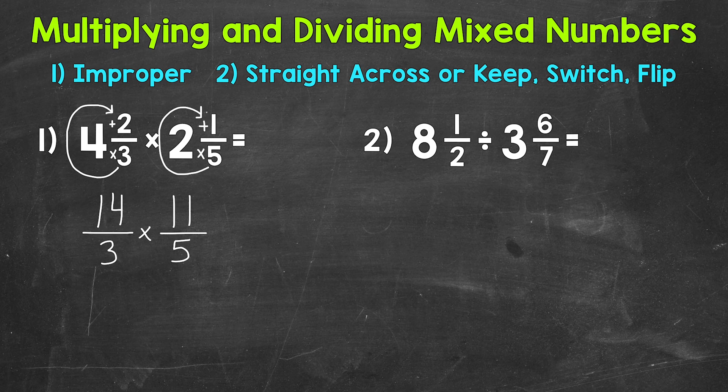Now the reason we convert these to improper fractions is to have a numerator, a top number, and then a denominator, a bottom number. Now we can multiply straight across. So 14 times 11, that gives us 154. 3 times 5 is 15. So we get 154 15ths, or 154 over 15.